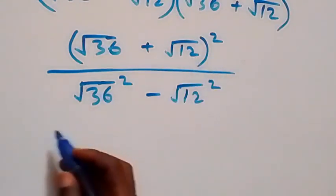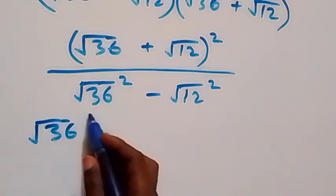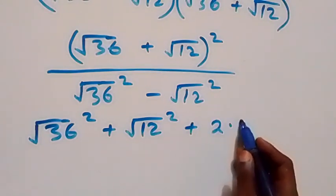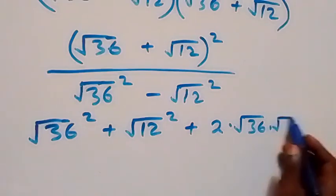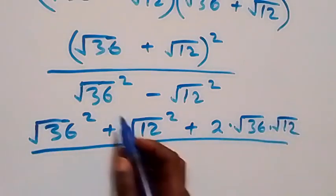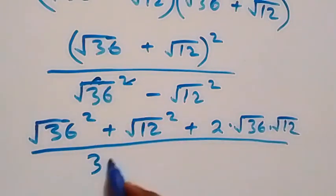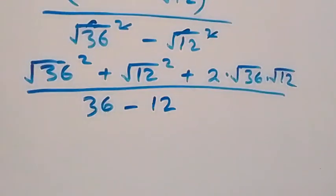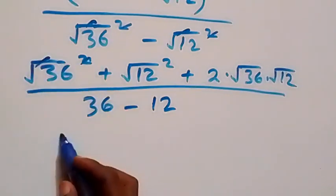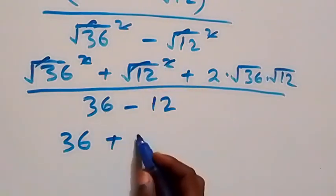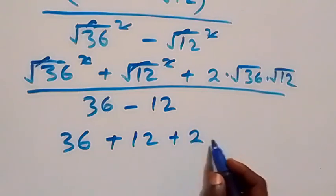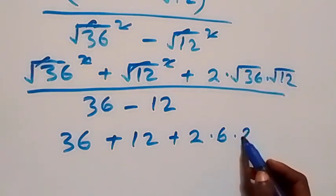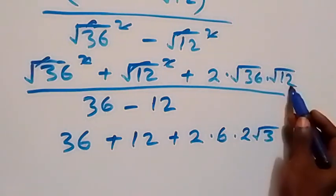The expansion of the numerator gives root 36 squared plus root 12 squared plus 2 times root 36 times root 12. The denominator gives 36 minus 12. Simplifying: square cancels square root giving 36 plus 12, plus 2 times 6 times 2 root 3.